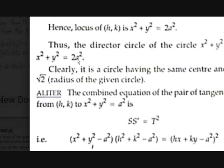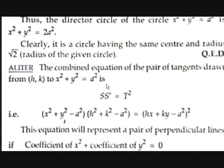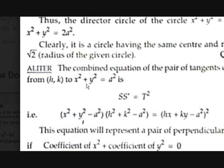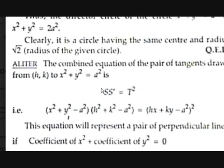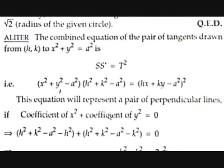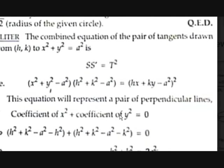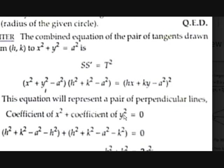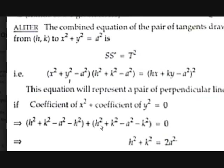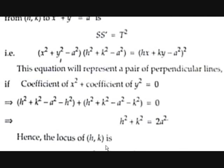Alternatively, the combined equation of tangents from (h, k) to x²+y²=a² is SS' = T², i.e., (x²+y²−a²)(h²+k²−a²) = (hx+ky−a²)². This represents a pair of perpendicular lines if the coefficient of x² plus the coefficient of y² equals zero. Simplifying that condition also gives h²+k²=2a², confirming the director circle is x²+y²=2a².